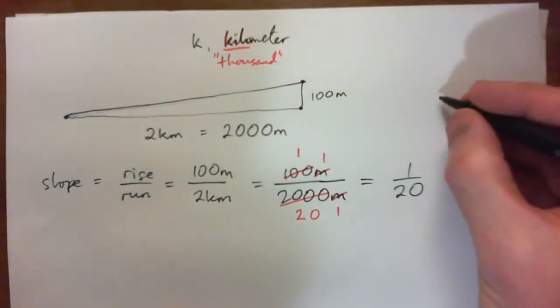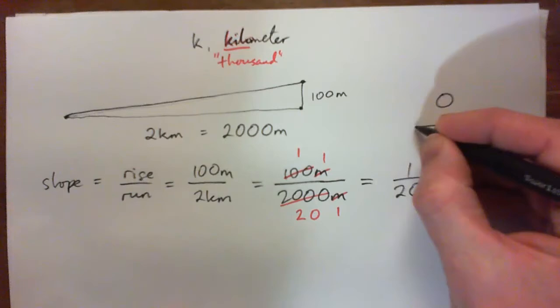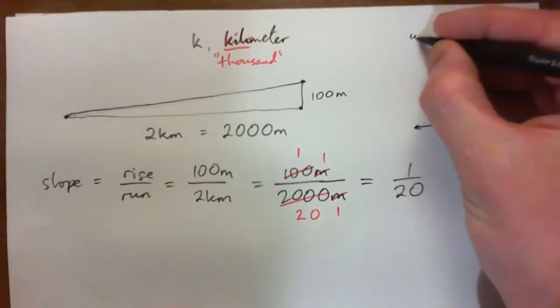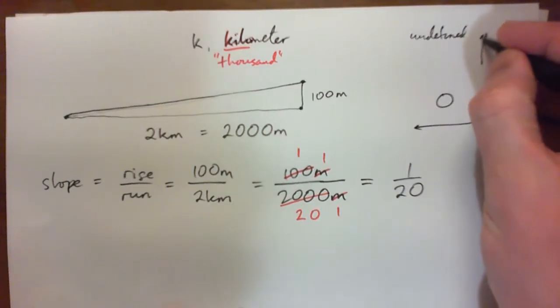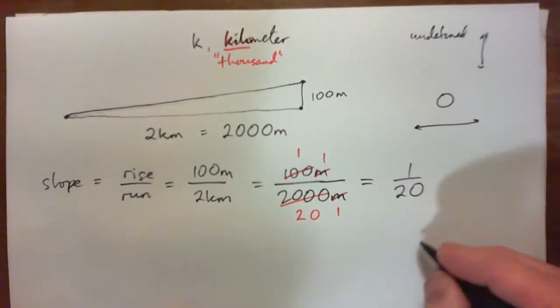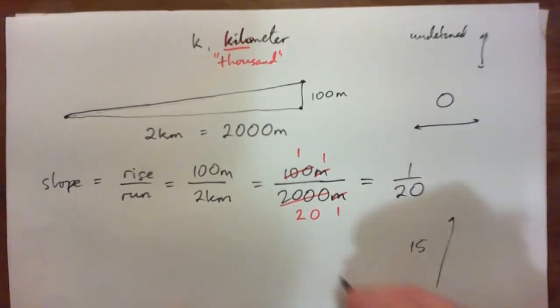So if a slope is 0, you've got a horizontal line. If a slope is undefined, or basically infinity, you've got a vertical line. If a slope is 15, you've got a steep line. If a slope is 0.01, you've got a very almost flat line.